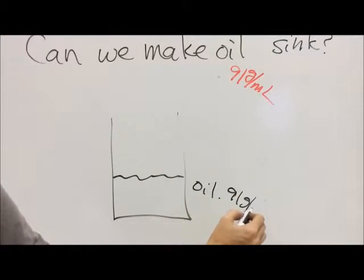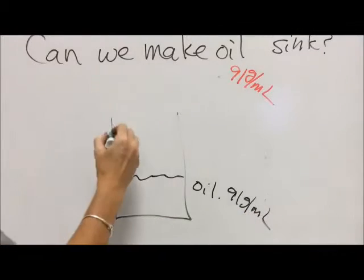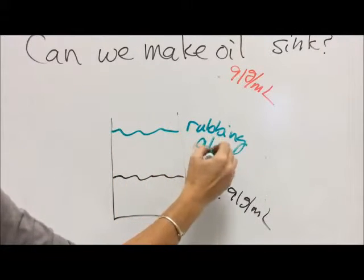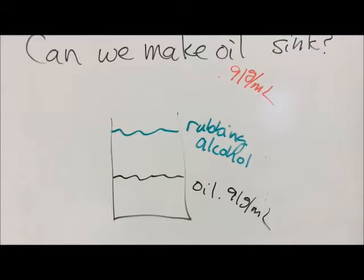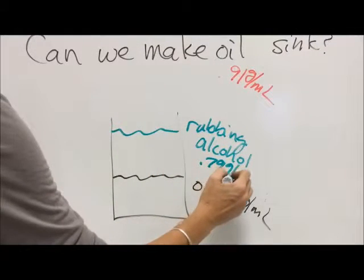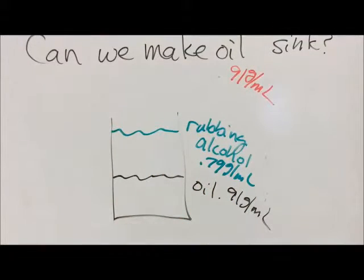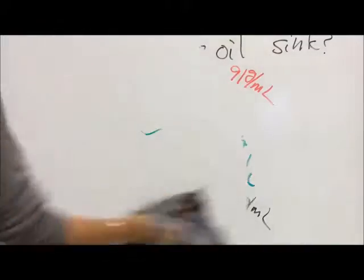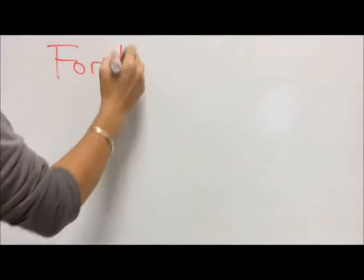Because oil is 0.91 grams per milliliter and rubbing alcohol is 0.79 grams per milliliter. So rubbing alcohol is less dense. Where do you think water would go if we put it in? Did you say to the bottom? You're right. Good job.